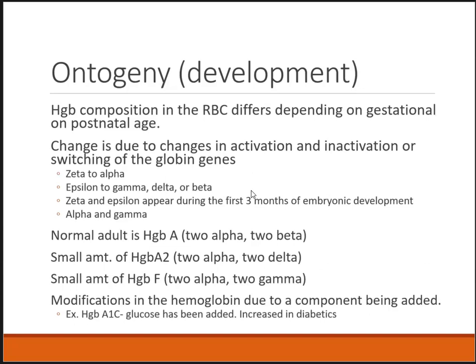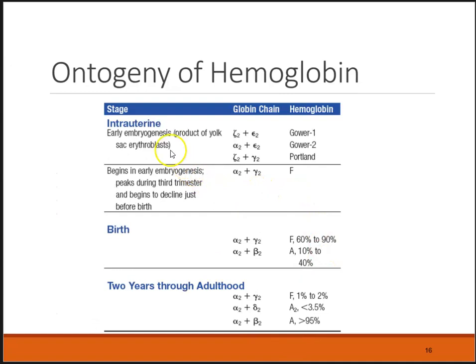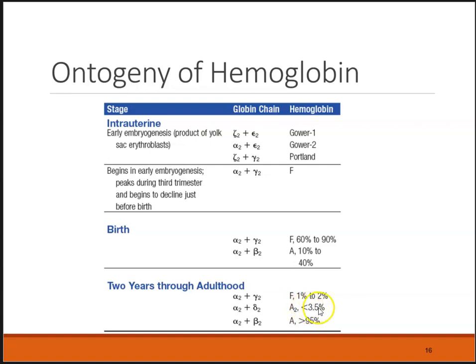At birth, alpha and gamma — hemoglobin F — is 60 to 90%. Alpha and beta — hemoglobin A — is 10 to 40%. Between two years through adulthood, hemoglobin A is 95%, the majority. Hemoglobin A2, alpha and delta, is less than 3.5%, and hemoglobin F, alpha and gamma, is 1 to 2%.